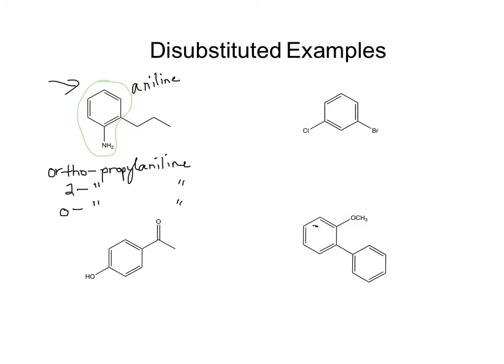Going now to the second example with the chloro and the bromo. Neither one of those is found on our list of common names, so we're going to name it as a true disubstituted benzene. One will be at number 1, one at number 3. I'm going to start at the bromine because it comes first alphabetically, so this becomes 1-bromo-3-chlorobenzene.